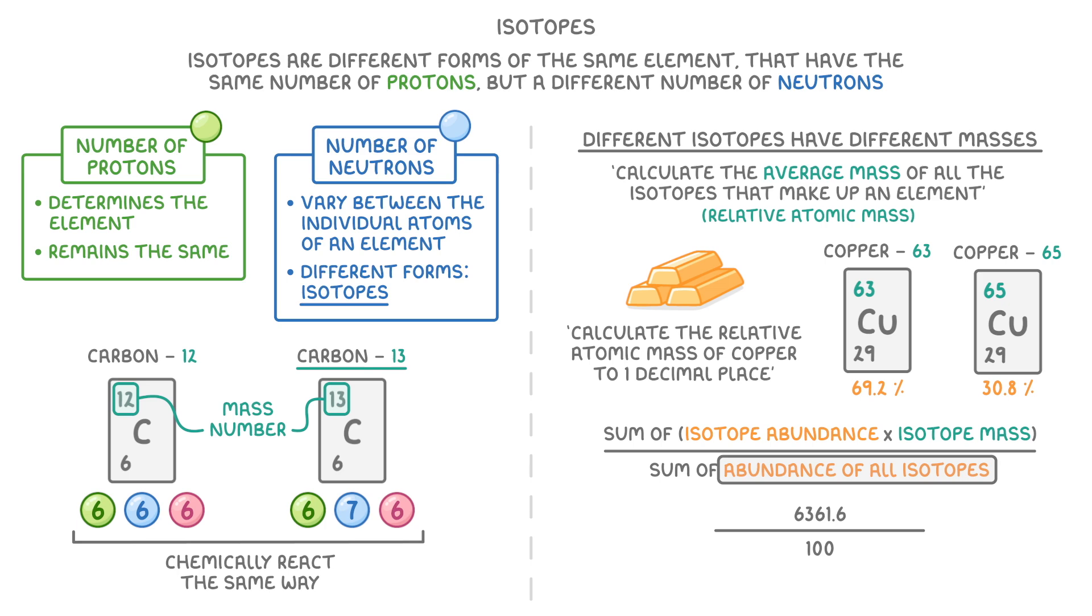So we divide 6361.6 by 100, and our answer is 63.616. But as the question asks for one decimal place, we give the answer as 63.6. And this number that we found is the relative atomic mass, which is denoted by the symbol AR. So we could say that the average mass of a copper atom is 63.6.